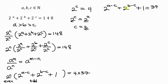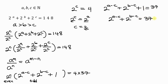Now we move 1 to the right-hand side: 2^(a−c) + 2^(b−c) = 37 − 1 = 36.